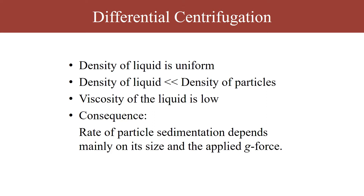In differential centrifugation, the density of the liquid is uniform — the homogenate medium may be a buffer, so it is going to be uniform. If the density of this buffer or liquid is much lower than the density of the particle, then it will sediment as a precipitate. The viscosity of this liquid is also maintained very low. Therefore, the rate of particle sedimentation depends on the size, shape, and density of the particle, as well as the applied RCF.